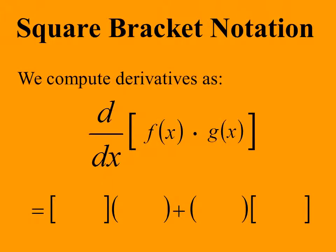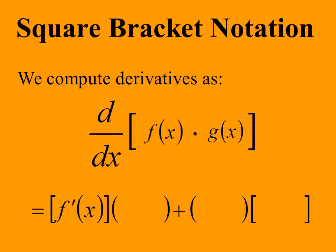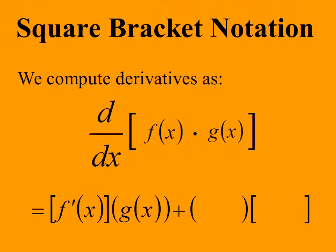We now illustrate the use of the square brackets in general. Consider the derivative of the product of functions f(x) and g(x). We know the form of the derivative; we just need to put the right things in the right places. We start with the derivative of the first function, f(x), and put it in the first pair of square brackets. Next, we write the second function, g(x), and put it in the first pair of parentheses.